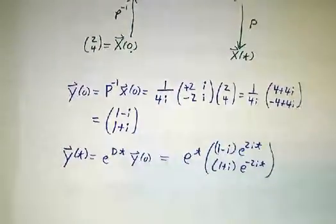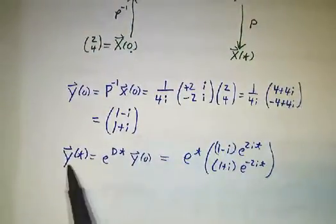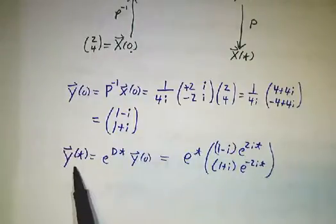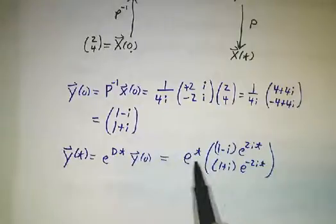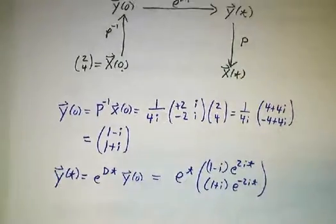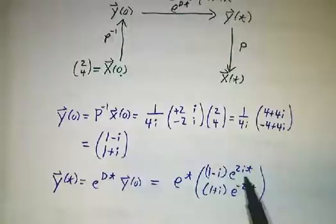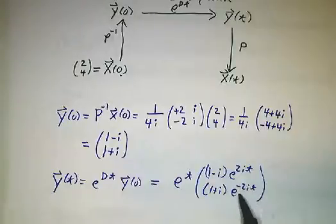Now, you take e to the, you go from y of 0 to y of t, by multiplying each term by e to the lambda t, and I'm gonna leave it in terms of e to the 2i t, and e to the minus 2i t, instead of expanding it out in terms of sines and cosines, at least for this stage of the game.